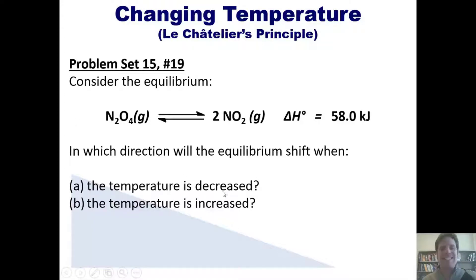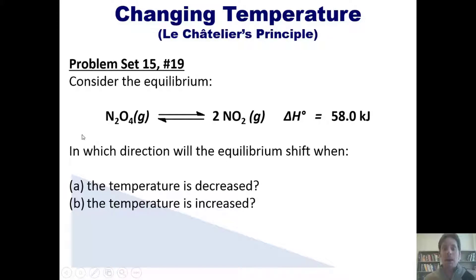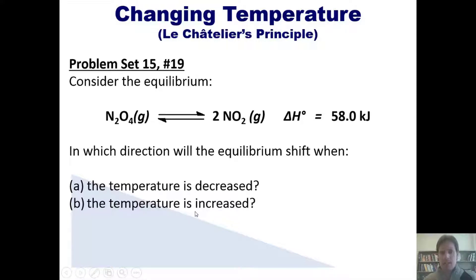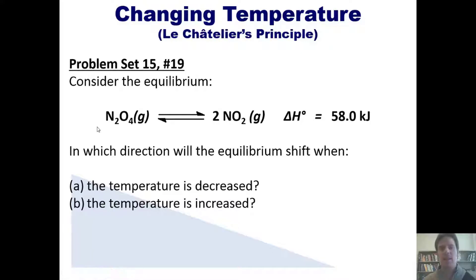If temperature is decreased, we're removing heat. Since heat is on the left side of this endothermic reaction, removing it leaves a gap on the left side, and the reaction shifts to the left to fill that gap. If temperature is increased, we're adding heat to the left side, which is like increasing the amount of reactant, so the reaction shifts to the right to restore balance.